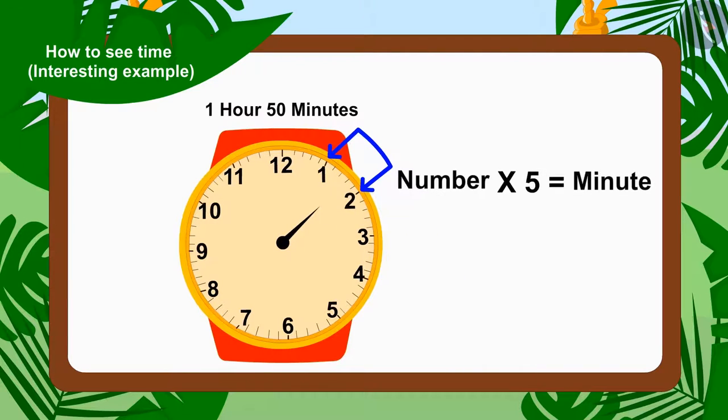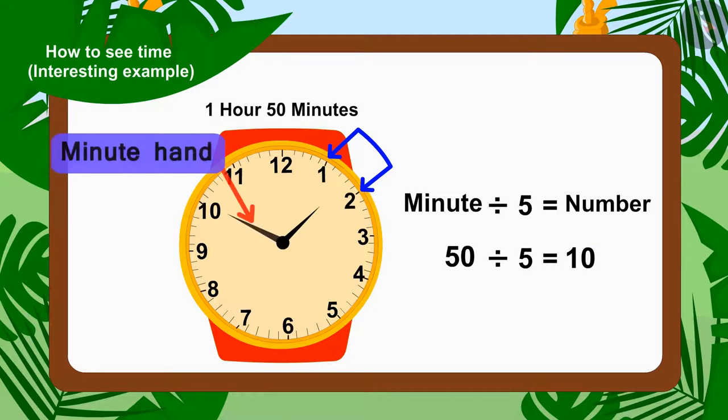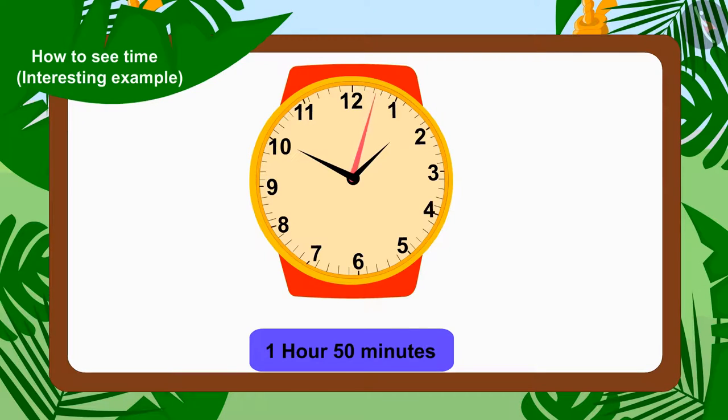This is very easy. As we multiply the number on clock by 5 to find the time in minutes, to find out what number the needle points to, we have to reverse it. That is, minutes divided by 5. So, 50 is divided by 5. How many does that make? Exactly, 10. Therefore, the minute needle will be on the number 10. In this way, we can show 1 hour, 50 minutes.